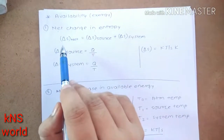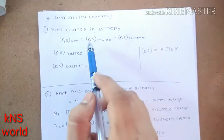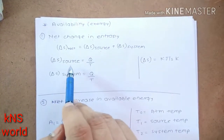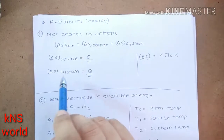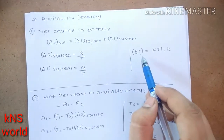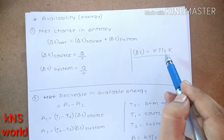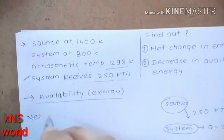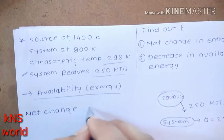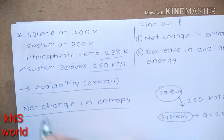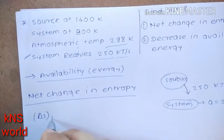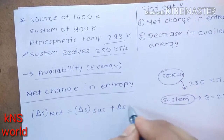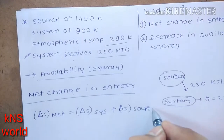The first formula is net change in entropy: delta S_net equals delta S_source plus delta S_system. The change in entropy of the source is found by Q/T, and similarly the change in entropy of the system is Q/T. The unit of entropy change is kilojoules per second per Kelvin.